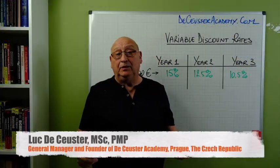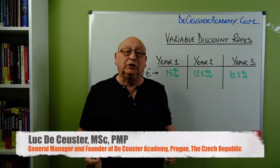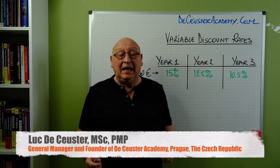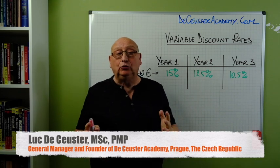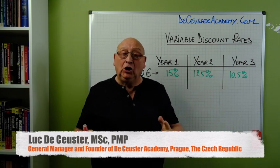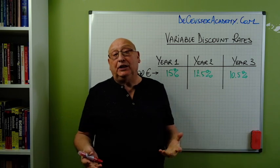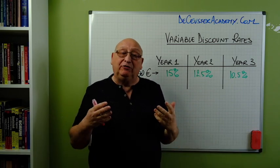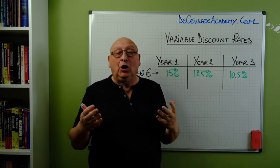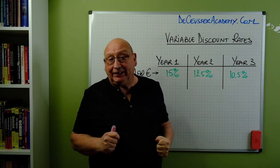Great seeing you here again. My name is Luke DeCoster, founder of the DeCoster Academy, and in this new video I'm going to talk about calculating the net present value when we have different periodical discount rates.